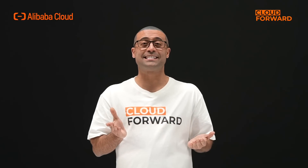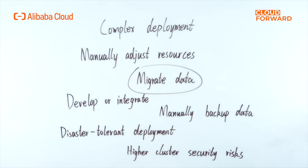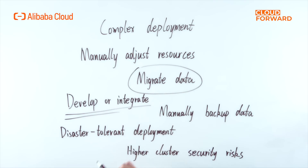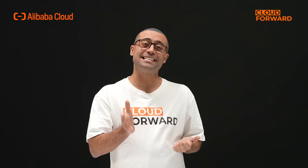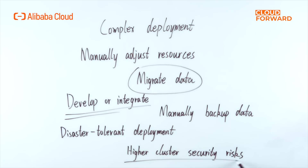Users who build their own Elasticsearch using ECS or physical servers experience a number of issues such as complex deployment operations, the necessity to manually adjust resources, the necessity to migrate data before upgrading the cluster version, the difficulty to operate and maintain, the necessity to develop or integrate open-source capabilities based on requirements of business scenarios, the necessity to manually backup data to ensure cluster availability, and issues with implementing disaster-tolerant deployment technology using only ECS basic security, leading to higher cluster security risks.